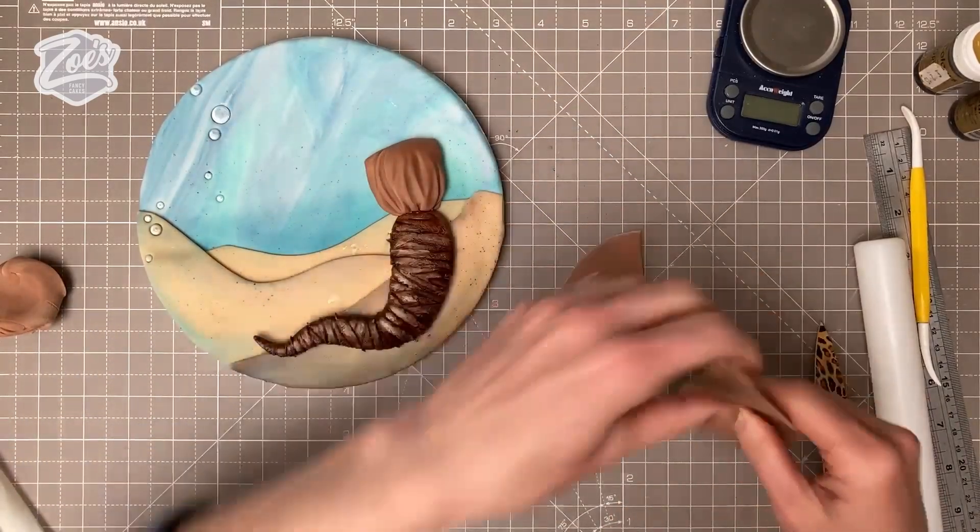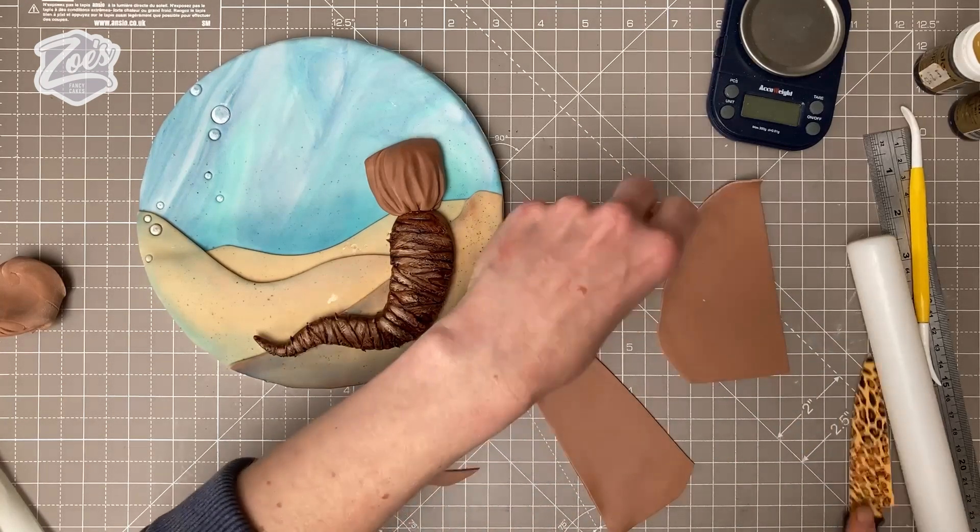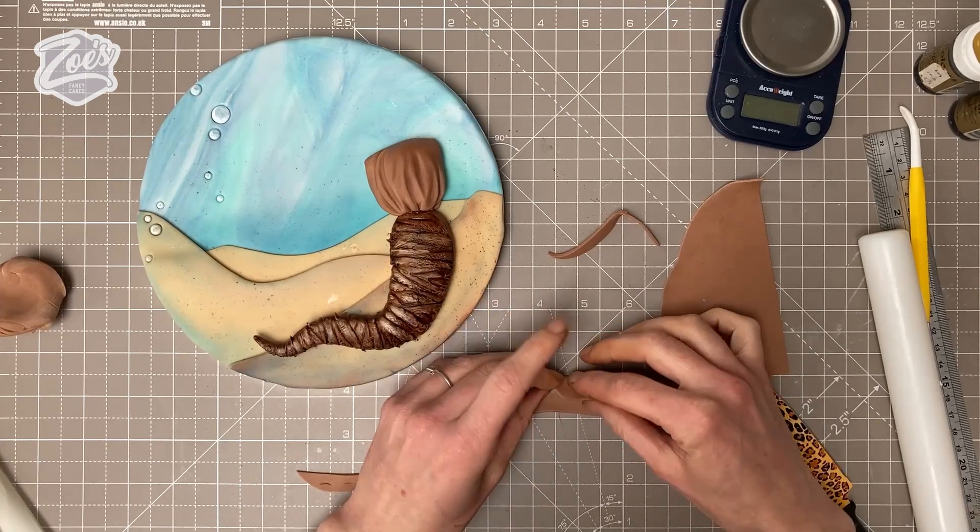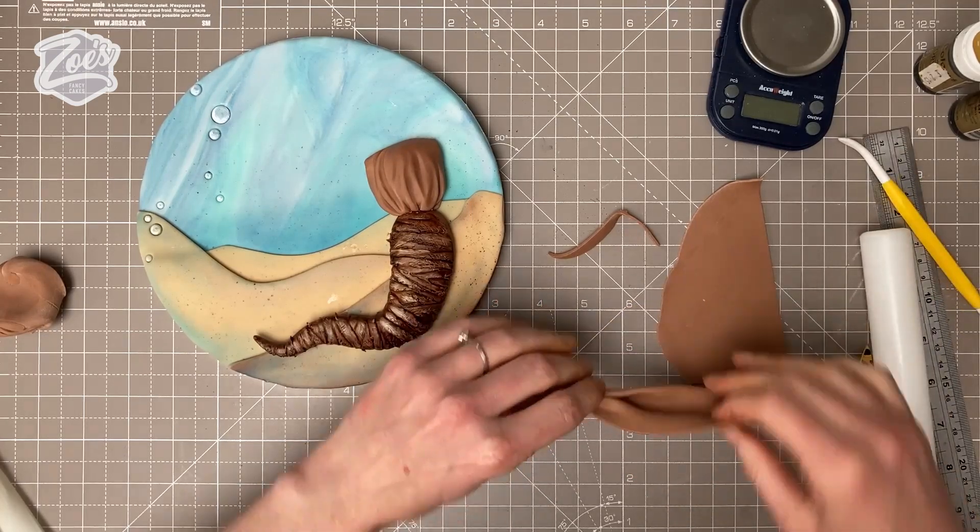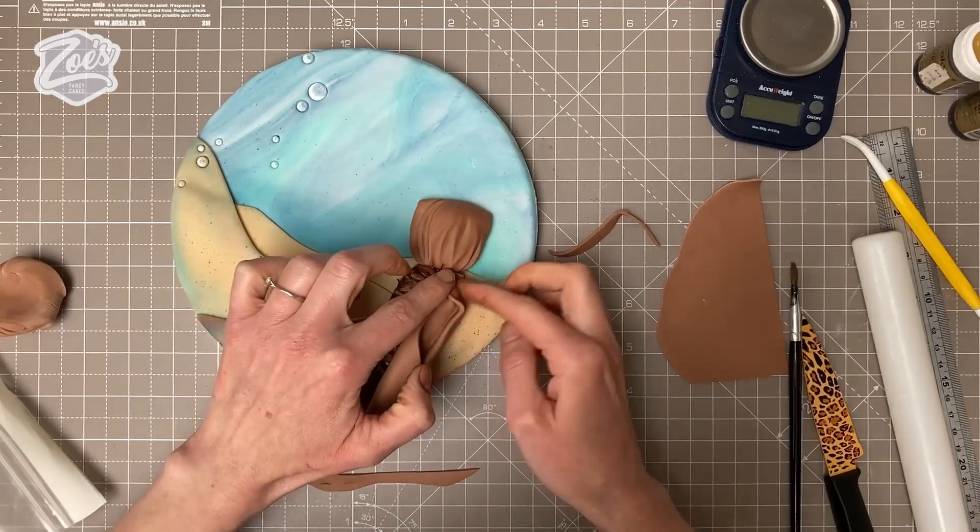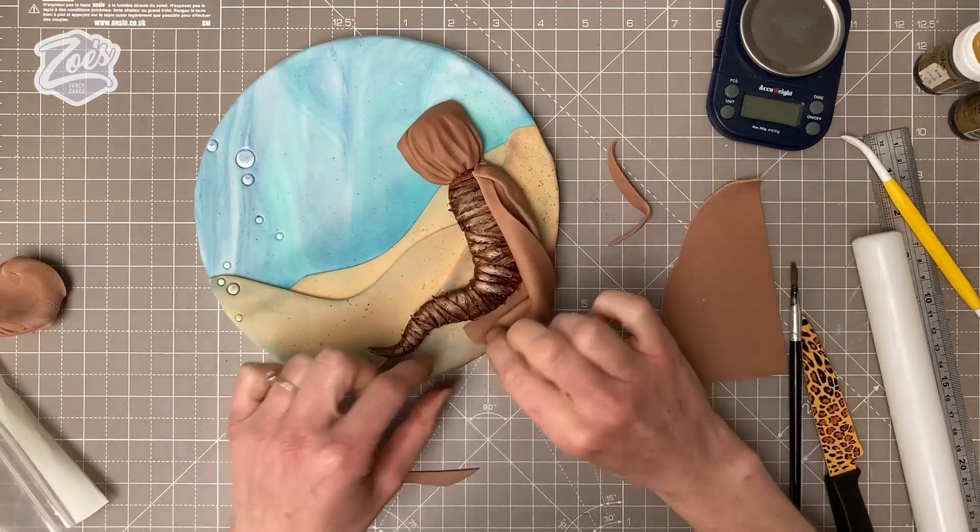They wear almost like a big jacket or cloak. We want this to look like it's coming down from around the tail, and because it's in water, it needs to have a bit of movement to it. We want to stick it so it looks like it's coming from behind the tail, and then play around with moving it around a little bit. We'll do the same at the other side, trying to fold it to get movement into it.